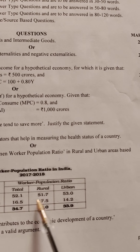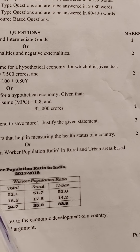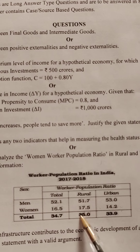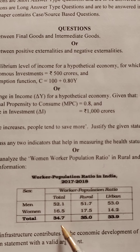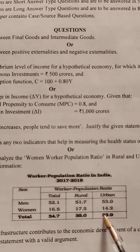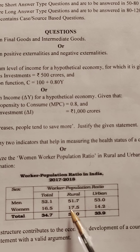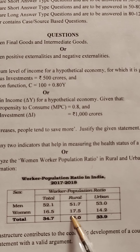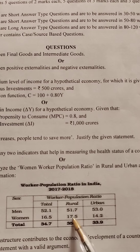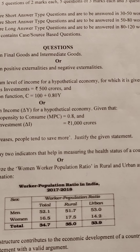Now for the analysis part — compare and analyze. You need to write an analytical statement. Due to abject poverty in rural areas, rural women are compelled to work more than their urban counterparts. Women workers in rural areas are significantly higher than those in urban areas. Just compare that and write it down.